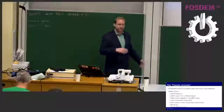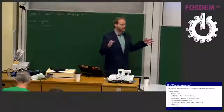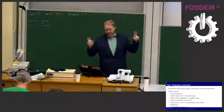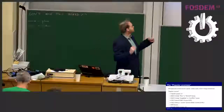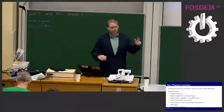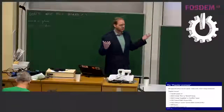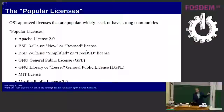OSI has about 83 open source licenses that they've approved as being open source, and they categorize them. If you go to their list of licenses, they identify which ones are the popular licenses. These are the licenses that everyone's pretty familiar with — there's a reason why they picked them out: Apache, the BSDs, a subset of the GNU licenses, MIT, and the Mozilla Public License.